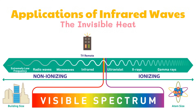Infrared waves are in the lower middle range of frequencies in the electromagnetic spectrum. Infrared radiation lies beyond the red end of the visible light, and the size of infrared waves ranges from a few millimeters down to microscopic lengths. The longer wavelength infrared waves produce heat and include radiation emitted by fire, the sun, and other heat-producing objects. Shorter wavelength infrared rays do not produce much heat and are used in remote controls and imaging technologies.